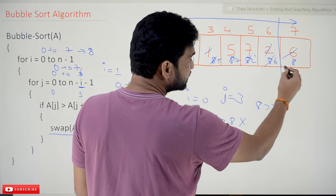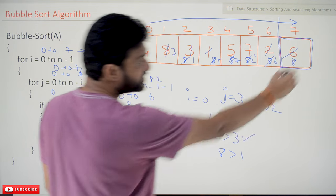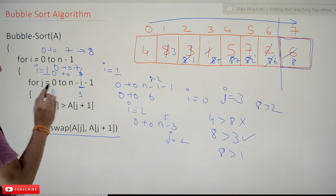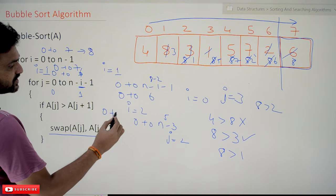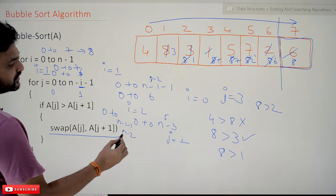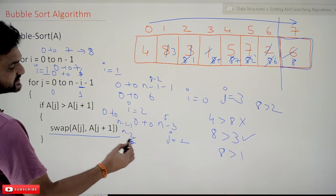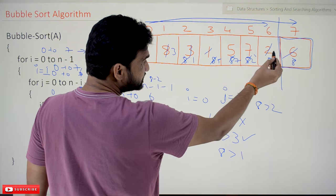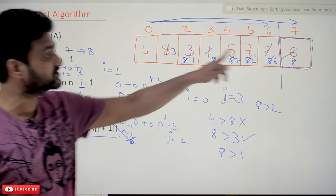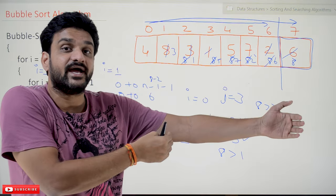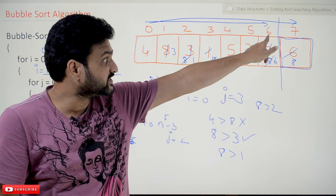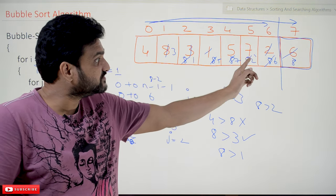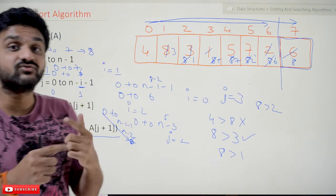Now there is no need to worry about the last element since it is already in sorted order. In the next iteration where i equals 1, the j-loop iterates from 0 to n minus 2, which is 6. By this time, the second largest element, 7, will have been shifted to position 6 — the new extreme end. This is how the bubble sort algorithm works.